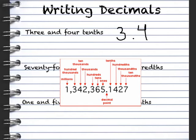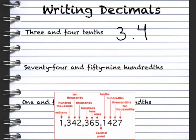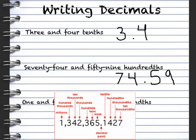Let's try the next one. 74 and 59 hundredths. Well, I know my whole number is 74 and, that's my decimal point, 59 hundredths. Well, hundredths is the second place. So, 74 and 59 hundredths looks like this, 74.59.